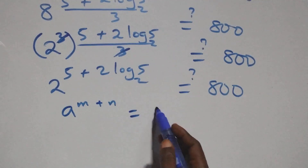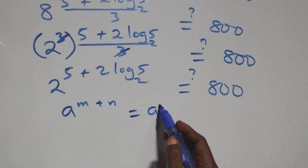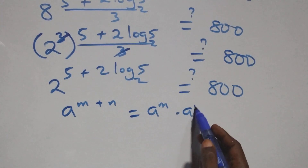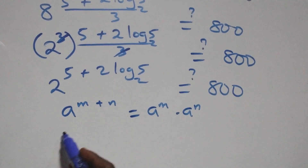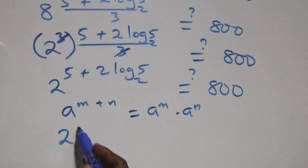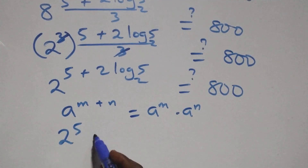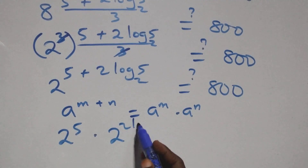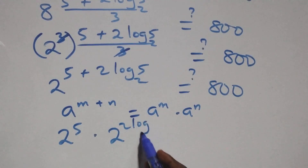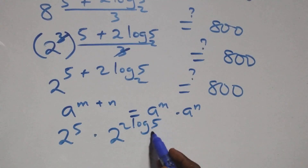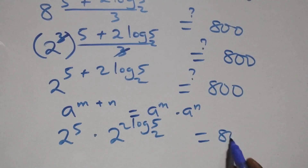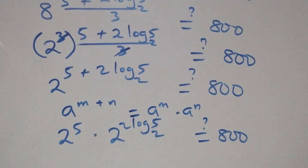And 2 raised to power 5 is 32. So we have 2 raised to power 5 times 2 raised to power (2 log 5 base 2) — is it equals to 800 on this side?